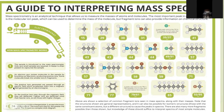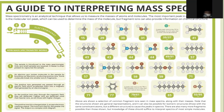Steps of how the mass spectrometer works. Step one: the sample is introduced to the mass spectrometer; only very small samples are required, and a heater is often present to vaporize the sample. Step two: an electron gun ionizes molecules in the sample by knocking out electrons, producing positive ions; some molecules break into smaller ions and fragments. Step three: the positive ions generated are passed through an electric field which accelerates them into a magnetic field generated by an electromagnet. Step four: as the positive ions pass through the magnetic field, they are deflected — lighter ions are deflected more than heavier ions, as are those with a higher charge.